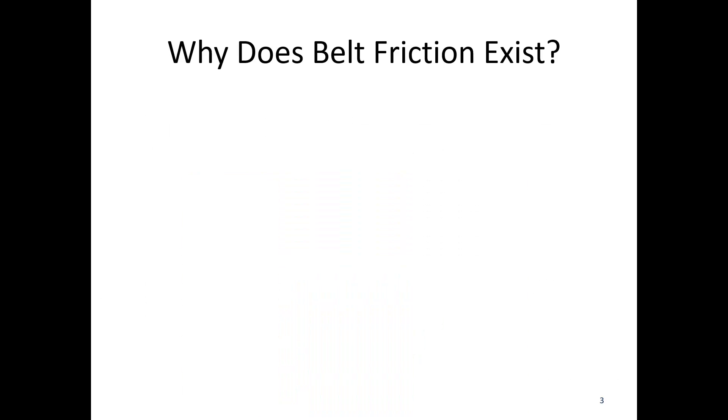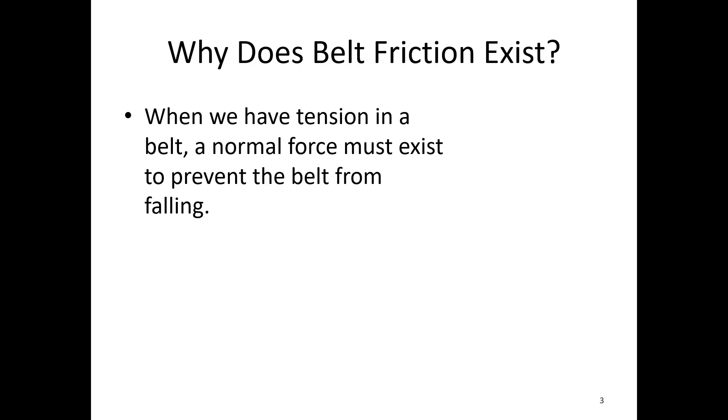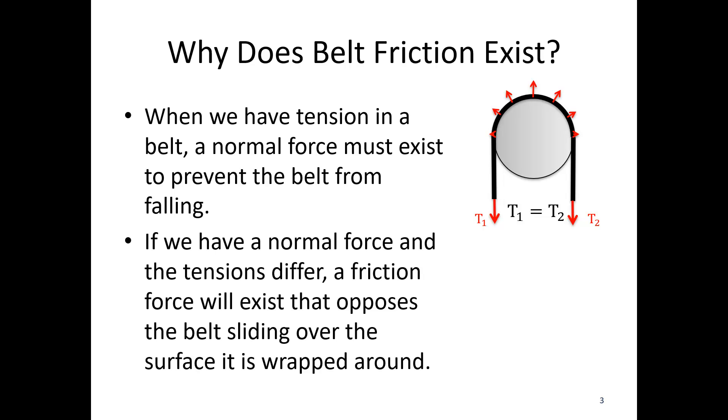Why does belt friction exist? When we have tension in a belt, cable, or rope, we must have a normal force that prevents it from falling. If we have tension forces that differ, it would tend to slide. Whenever we have sliding that might occur, we have a friction force that opposes that. The friction force always tries to prevent the rope, belt, or cable from sliding relative to the object we're working with.